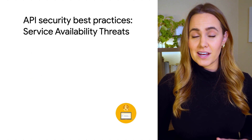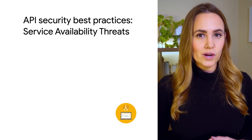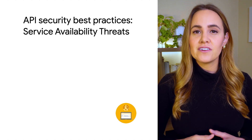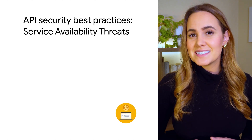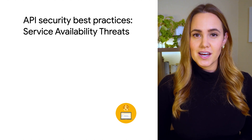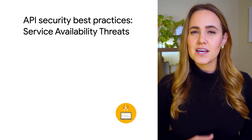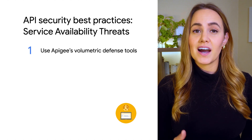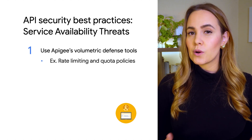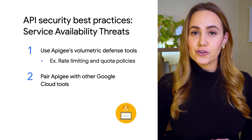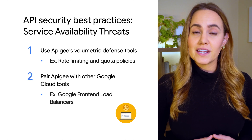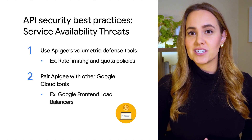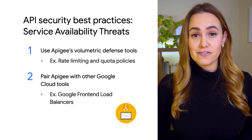Service availability threats are also a large concern to organizations. These attacks target APIs by flooding your network with requests, resulting in denial of service issues. To protect against these attacks, we recommend that you use the volumetric defense tools Apigee provides, such as rate limiting and quota policies. Using these with other Google Cloud tools like Google front-end load balancers, which are built specifically to deal with DDoS protection, is a great best practice to follow.